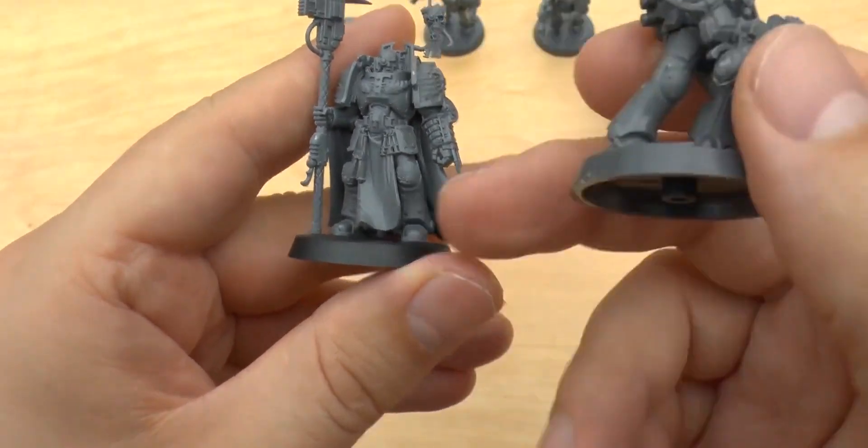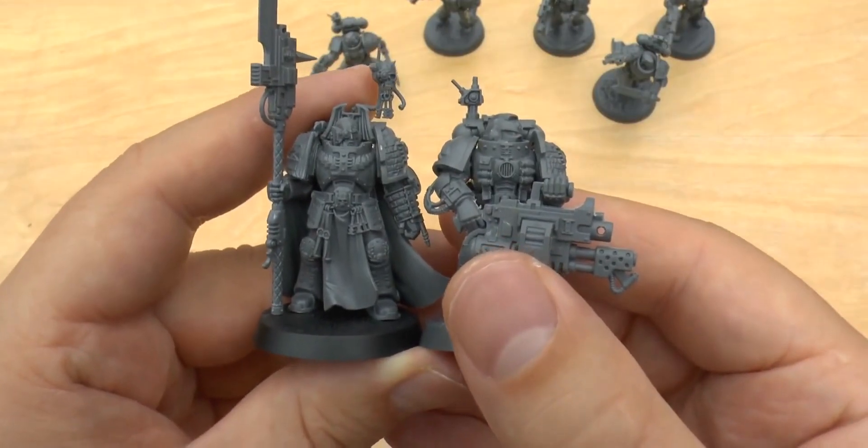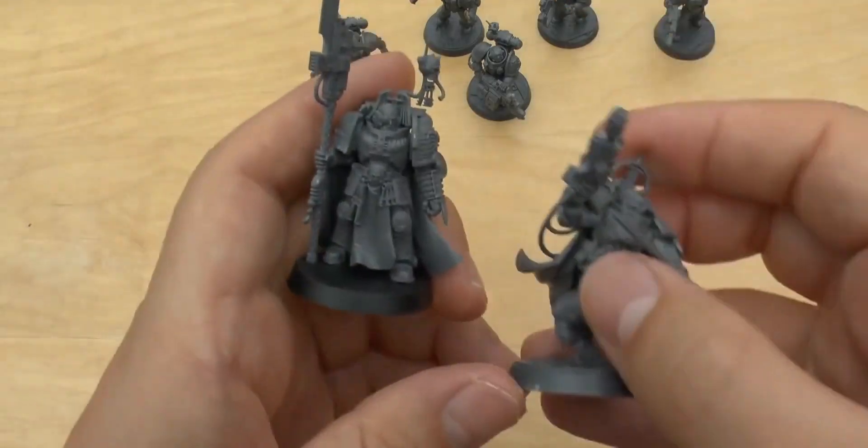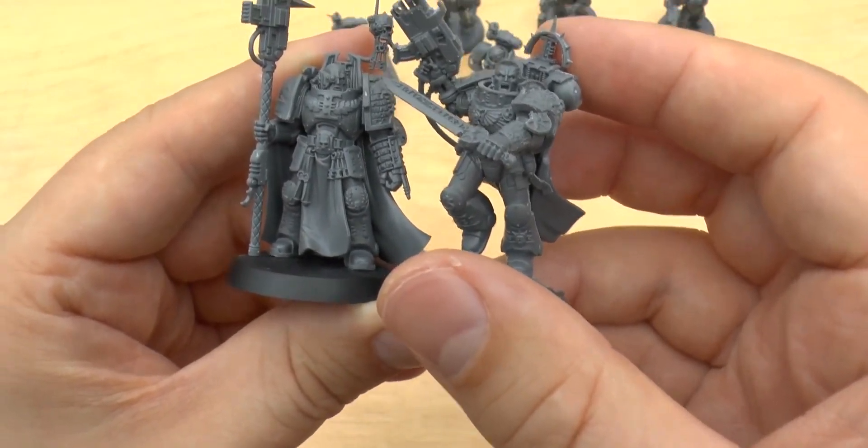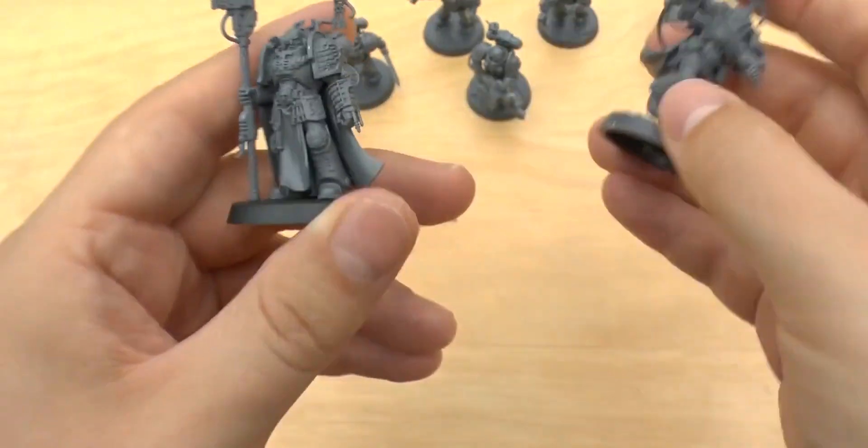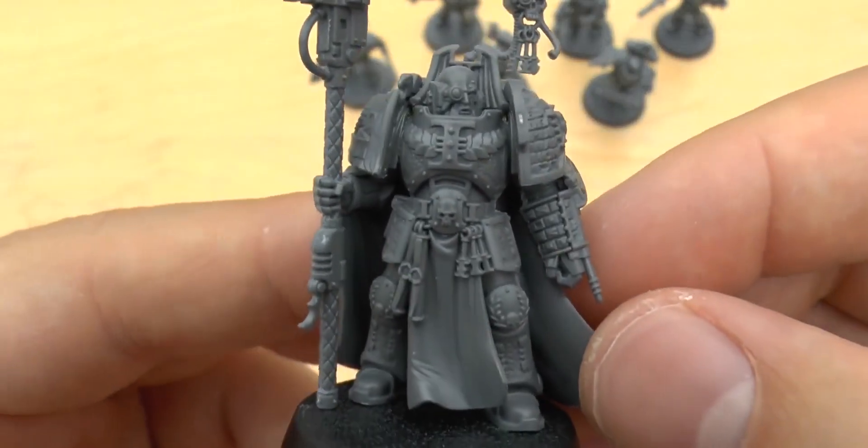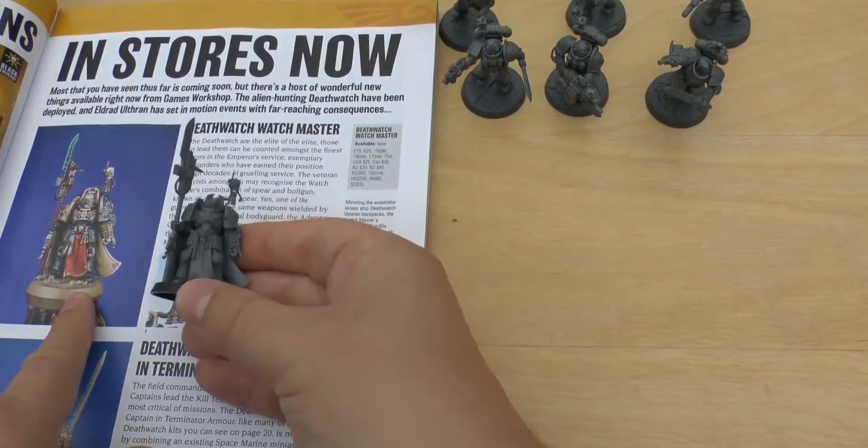He's decent size. It's just this guardian spear makes him look very, very imposing. Here he is next to Artemis. I mean Artemis is in a bit of an action pose, so he's bound to look bigger. Yeah, so really, really impressed with the miniature. So that's what he'll essentially look like.